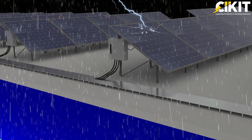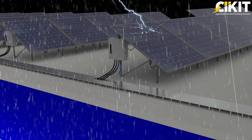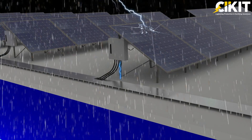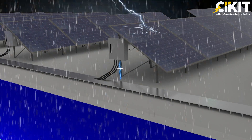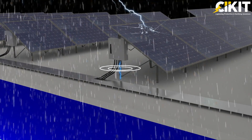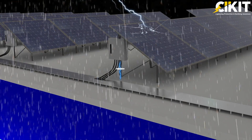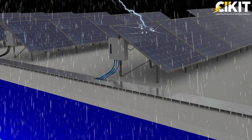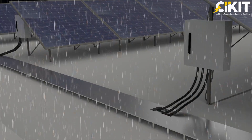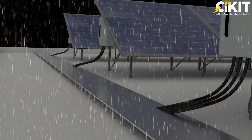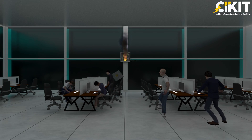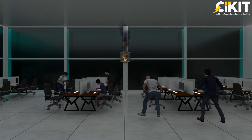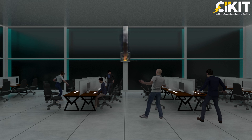When lightning impulse current flows through any conductor, a magnetic field will be produced around the conductor. If that magnetic field gets linked with any power line or data line, impulse surges will get induced on them. These impulse surges will affect the performance of the equipment connected to them.